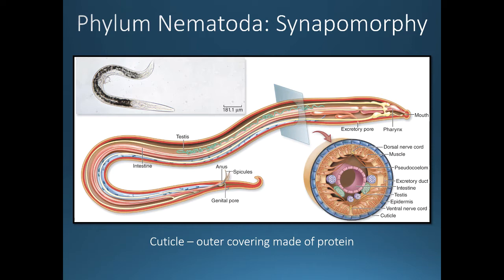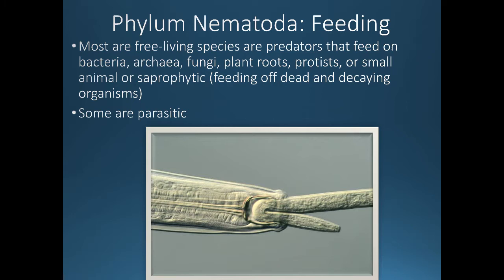Most nematodes are free-living species, meaning they don't live inside a host. They are most often predators, feeding on bacteria, archaea, fungi, plant roots, small protists, or animals smaller than them — as shown here, where one nematode is eating a smaller nematode. In addition to being predators, some are saprotrophic, feeding on dead and decaying organisms, and some are parasitic.